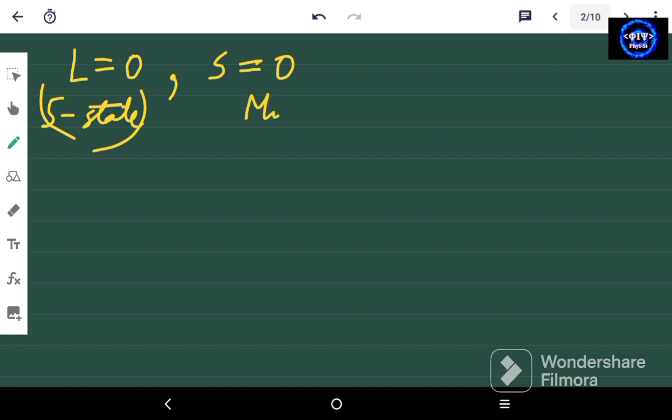The multiplicity of this state is given by 2S plus 1. If you put S equals 0 it will be equal to 1.